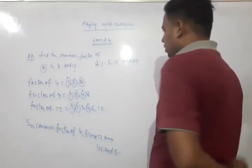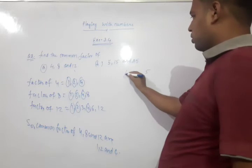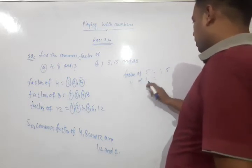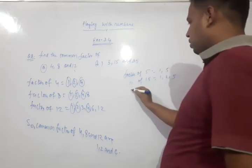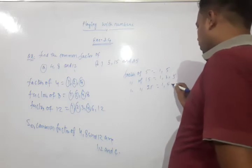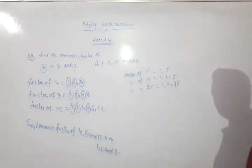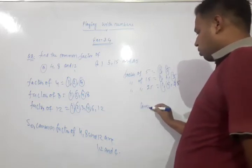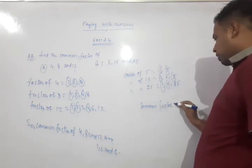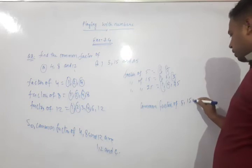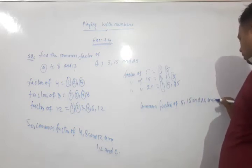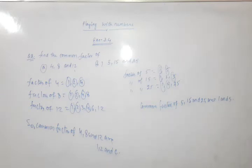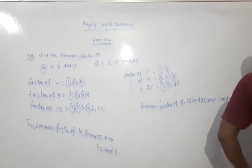Similarly, for part B with 5, 15, and 25: factors of 5 are 1 and 5. Factors of 15 are 1, 3, and 5. Factors of 25 are 1, 5, and 25. The common factor is 1 and 5. So common factors of 5, 15, and 25 are 1 and 5.